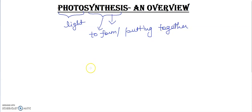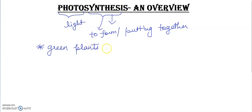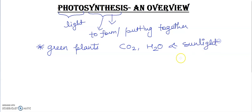So this is the process by which green plants use sunlight. This process basically occurs in green plants, and the plants use sunlight to make their food from simple molecules like CO2, water, and sunlight. This is essentially a simple process — the basic food-making process of plants.